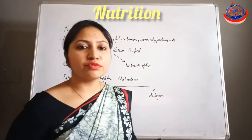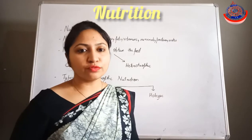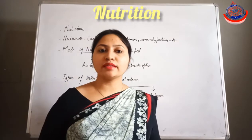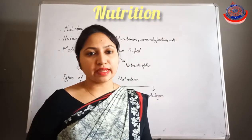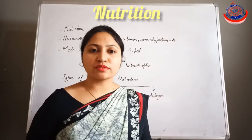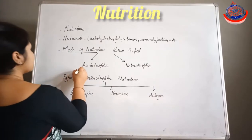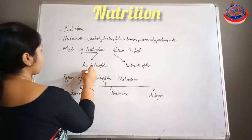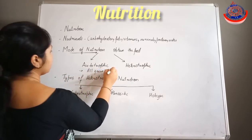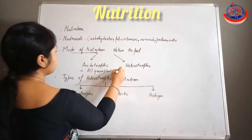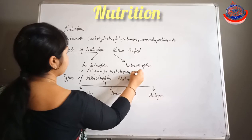Autotrophic mode of nutrition includes autotrophs, which can prepare their own food from simple inorganic molecules like carbon dioxide and water, in the presence of sunlight and chlorophyll, by the process of photosynthesis. Examples include all green plants and photosynthetic bacteria.